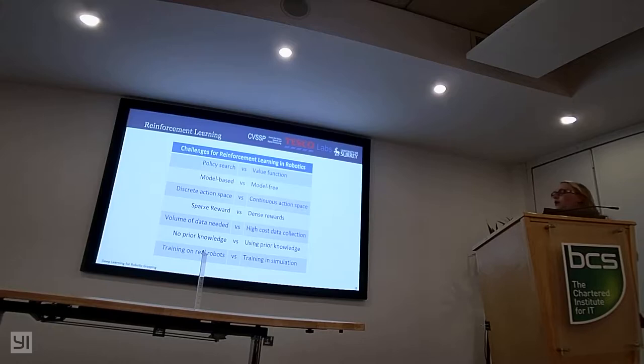We also need to consider the action space. A lot of the algorithms work really well with discrete action spaces, but as soon as we move to continuous action spaces, which is more ideal for robotics, because we want to be able to have actions which aren't mutually exclusive, we want to be able to move up and left at the same time, for example. We also have the problem of volume of data. If we're moving towards deep reinforcement learning, we need so much more data. However, as you all know, robotics is slow when it comes to acquiring data.